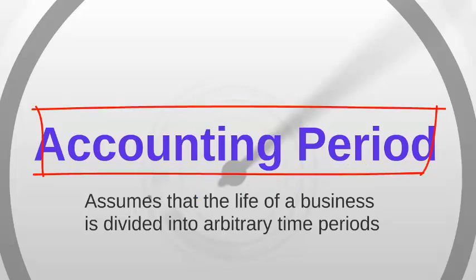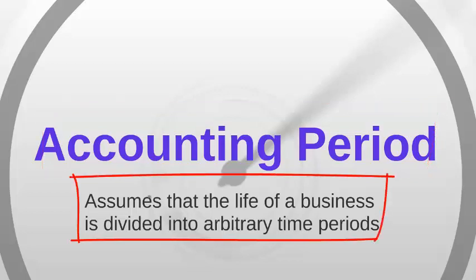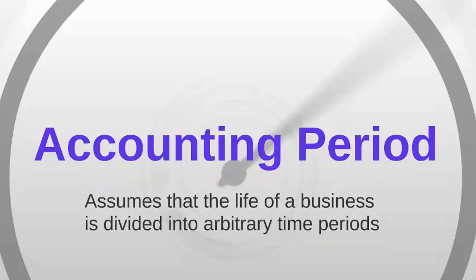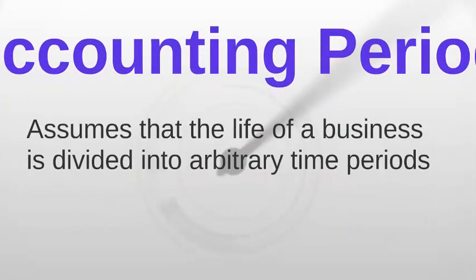Basically what it means is that we divide the life of the business into arbitrary time periods. For our purposes we always imagine that it's going to be from the 1st of July to the 30th of June the next year. That also happens to be the taxation or financial year when the income tax is determined. And for our purposes our financial year, our accounting period, always ends at the 30th of June every year.